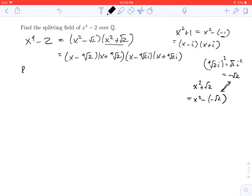So this tells us that the roots of x to the fourth minus 2 are fourth root of 2 minus the fourth root of 2, and then plus or minus the fourth root of 2 times i. We obtain the splitting field by taking the base field, which was Q, and adjoining all of the roots.